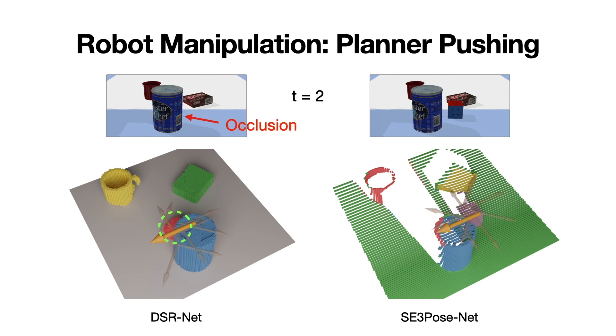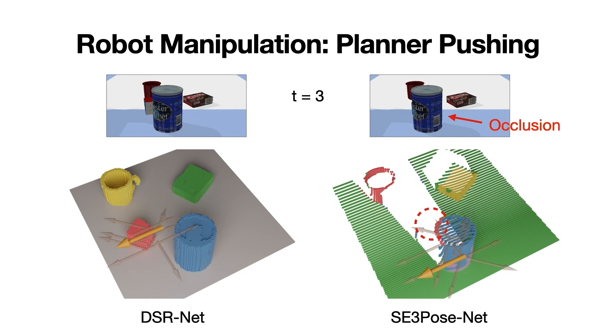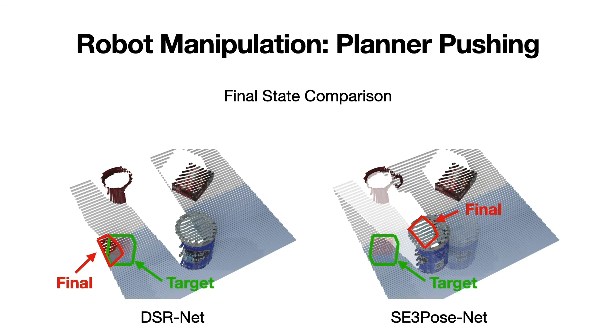In the second step, DSR correctly captures the occluded object and chooses the appropriate action. In the next step, SE3 pose also encounters occlusion, but it loses track of the occluded object and chooses the wrong action. This comparison indicates that the final state of our DSR net is closer to the target state. This results demonstrates that with DSR, the control policy is able to sample actions around the occluded object to predict the next state and cost accurately.